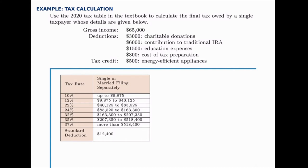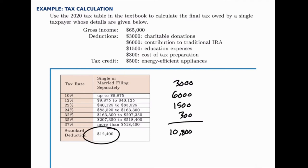So if we add up these deductions for this person, we have $3,000 plus $6,000 plus $1,500 plus $300, and that's a total of $10,800, which is less than the standard deduction. So this person will be better off taking the standard deduction rather than the itemized deductions.